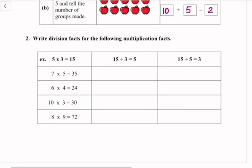Question number 2: write division facts for the following multiplication facts. 5 × 3 = 15, so 15 ÷ 3 = 5 and 15 ÷ 5 = 3. Next, 7 × 5 = 35, so 35 ÷ 5 = 7 and 35 ÷ 7 = 5. Next, 6 × 4 = 24, so 24 ÷ 4 = 6 and 24 ÷ 6 = 4.